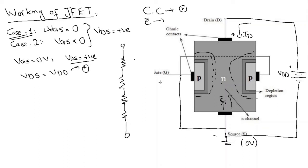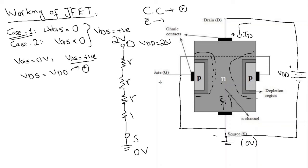This is the drain terminal and this is the source terminal. The source terminal is connected to ground, so we have zero volts here and voltage VDD at the drain. Let's suppose VDD equals two volts. The resistances are uniformly distributed: I have R, R, R, and R along the channel, where R is some resistance value in ohms.